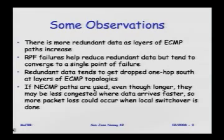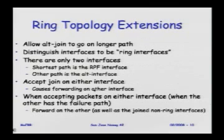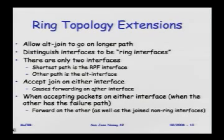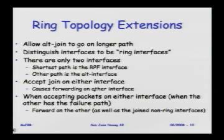When we say near zero packet loss, it's a little subjective. For non-equal-cost multipath, we made extensions to work in ring topologies — many ISP networks have fiber in the ground based on rings, and not every node on the ring is equal cost to the source. Each router on a ring has two ring interfaces: one is the shortest-path RPF interface and the other is the alternate interface on which alternate joins are sent. The router accepts joins on either interface, which causes forwarding from one ring interface to another, and when accepting packets on either interface, it forwards on the other.